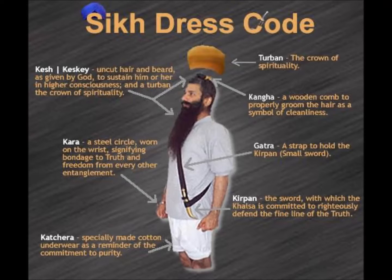Based on the events surrounding Tegh Bahadur's execution and Gobind Singh's subsequent actions, the five Ks were incorporated as a mandate for baptized Sikhs. This act created an external uniform for the spirit of the Khalsa that was easily identifiable in public.